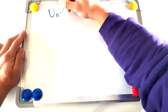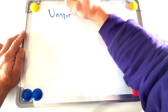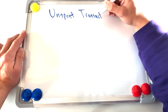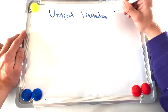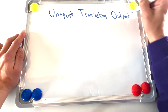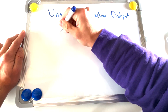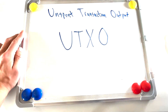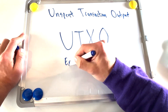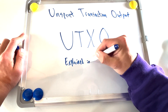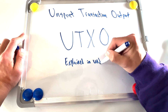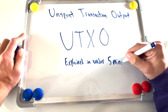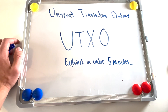UTXOs, or unspent transaction outputs, are the technical underpinning of the Bitcoin network. It is crucial that anybody who takes Bitcoin into self-custody has a basic understanding of UTXOs — what they are, why they are important, and how to manage them. A lack of understanding can cause major issues down the road. Here's everything you need to know about UTXOs in under 10 minutes.